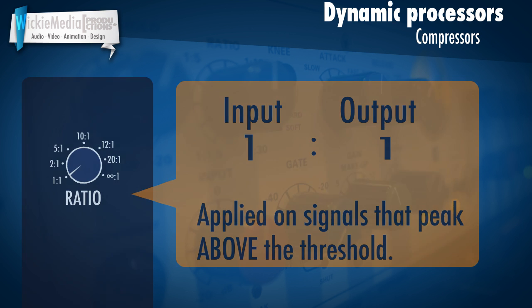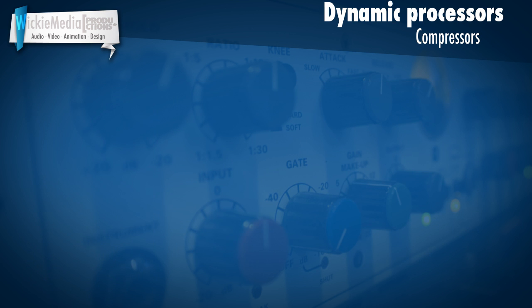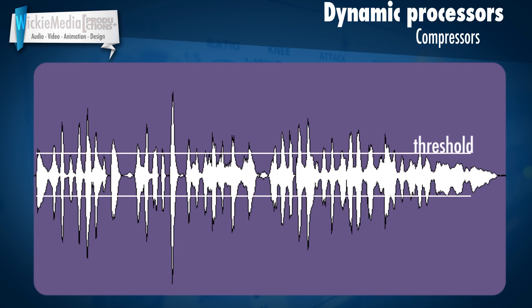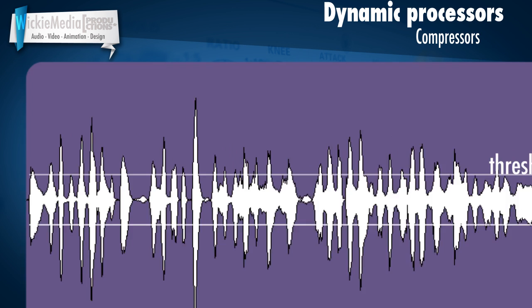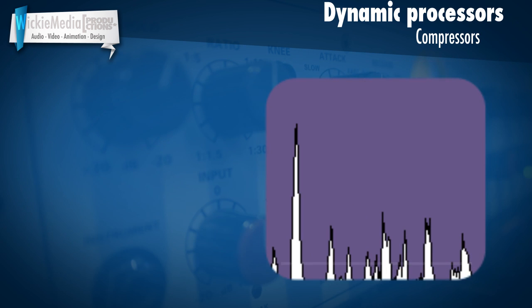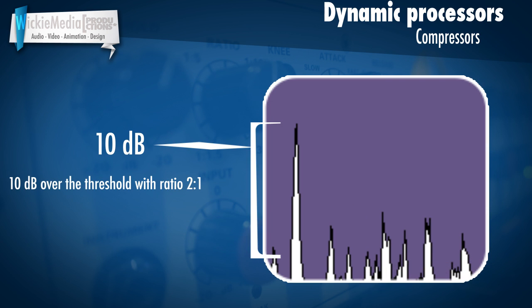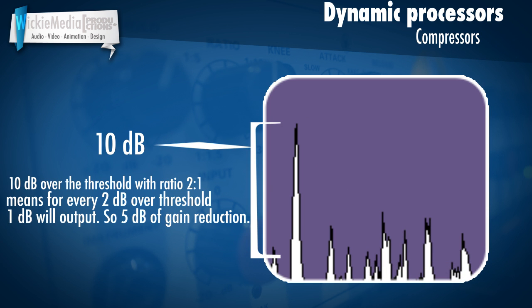A ratio of 2 to 1 means that for every 2 dB above the threshold, 1 dB will be outputted. So if the level goes 10 dB over the threshold with a ratio of 2 to 1, that means 5 dB will be outputted and 5 dB will be reduced.